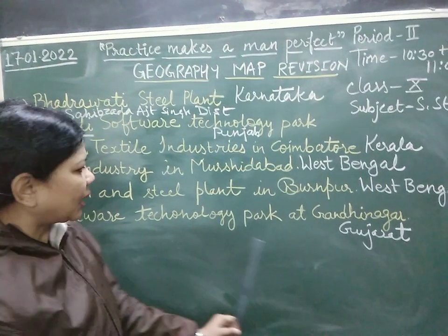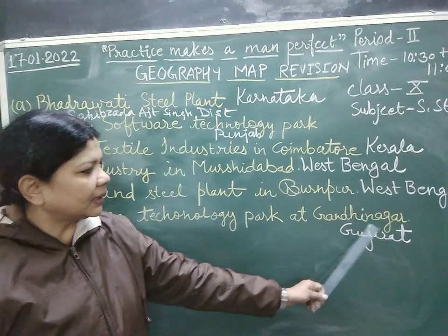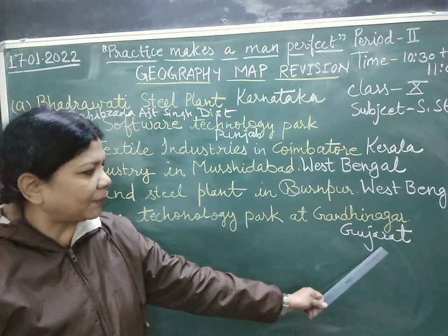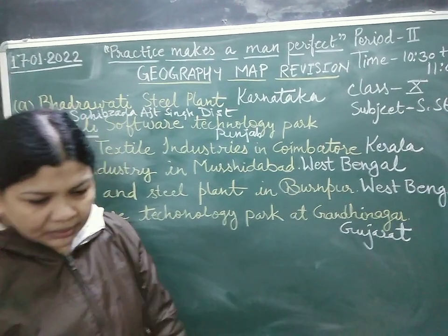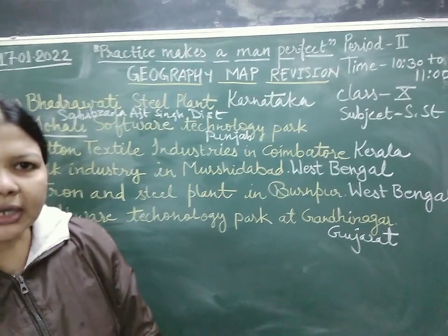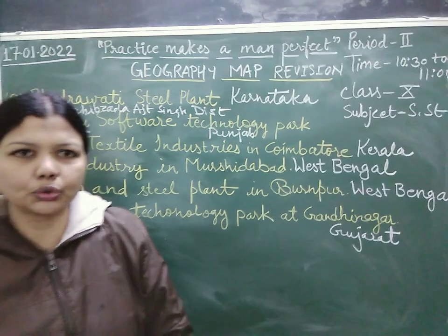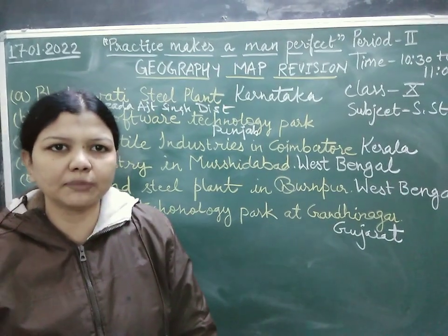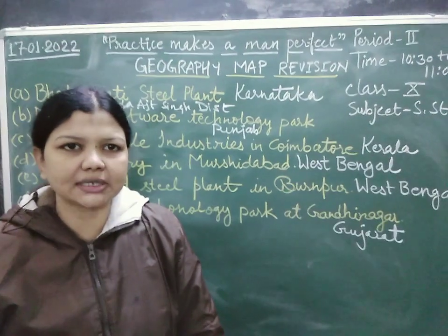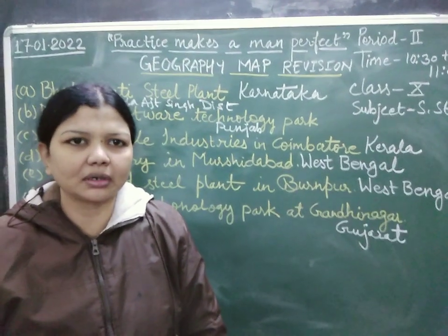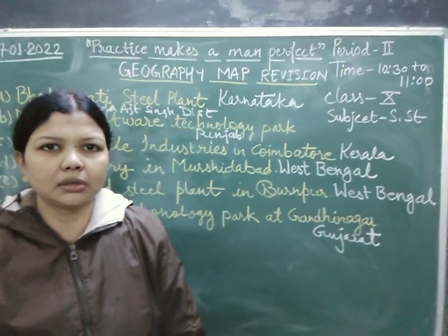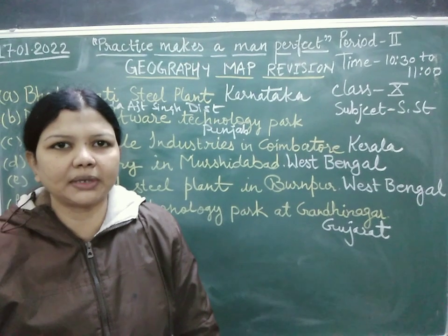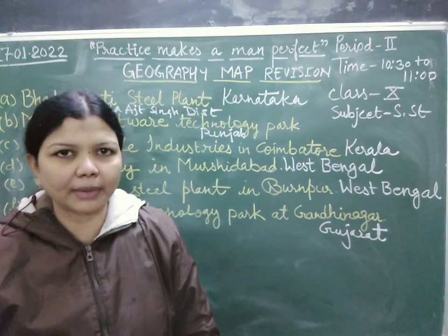Software Technology Park is at Gandhinagar. Gandhinagar is the capital of Gujarat, so it is in Gujarat. If you learn the names of the states and their capitals, you will easily be able to locate these places on the map.